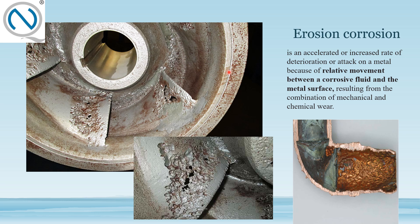Then there is erosion corrosion. Erosion corrosion is related to the relative movement between a corrosive fluid and a metal surface. When there is movement between the corrosive fluid and the metal surface, it accelerates the corrosion. It is an accelerated or increased rate of deterioration or attack on a material because of relative motion, resulting from a combination of mechanical and chemical wear — both mechanical wear in rotating parts and chemical wear from chemical solutions or materials.